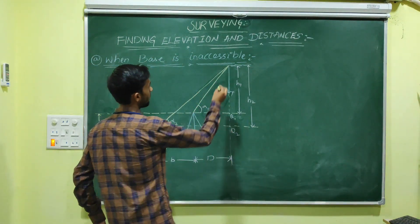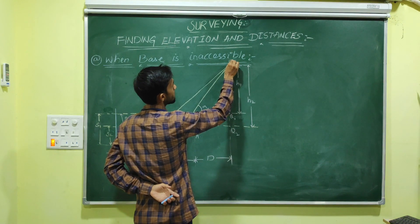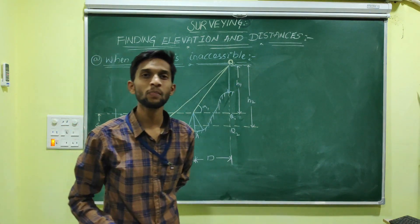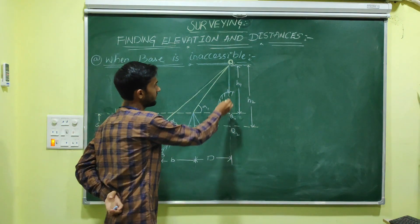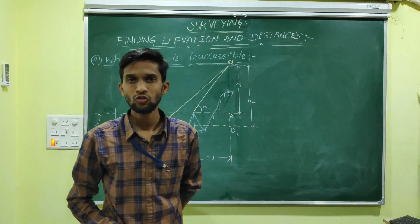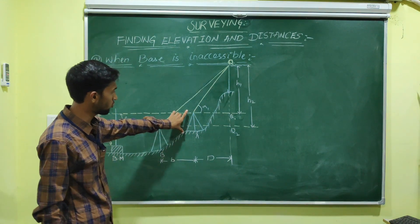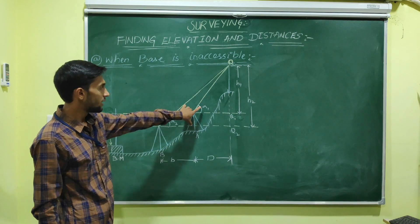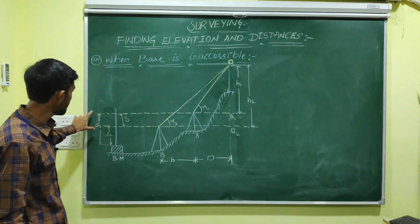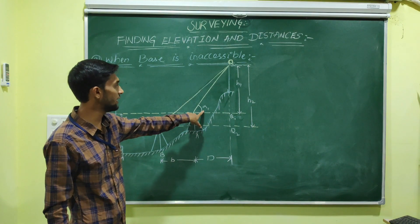Suppose we want to find out the RL of Q and the base is inaccessible from our stations. So first, set up the instrument at A, take the vertical angle, and simultaneously take a staff reading on the benchmark — that is S1 — and the vertical angle is alpha.